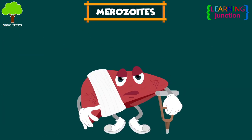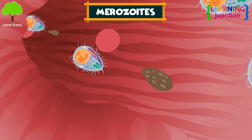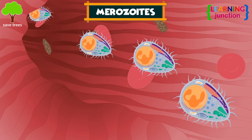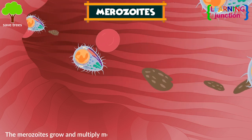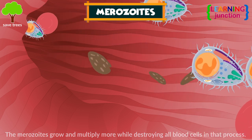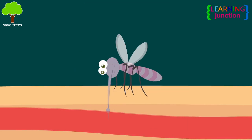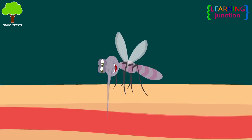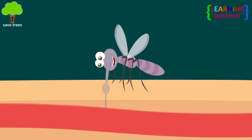Stage 3 — Merozoites. Over the next one to two weeks, the merozoites exit from the liver, entering the bloodstream again, where they harm the red blood cells. The merozoites grow and multiply while destroying blood cells in the process. Some merozoites develop into gametocytes, which are later taken up into the bloodstream by a mosquito, and the whole cycle starts again.